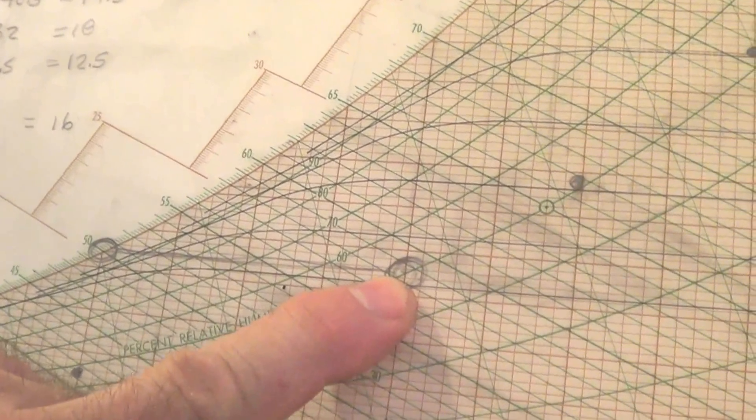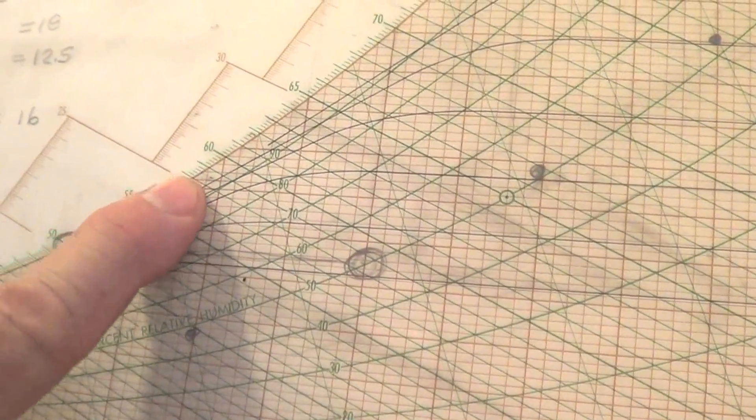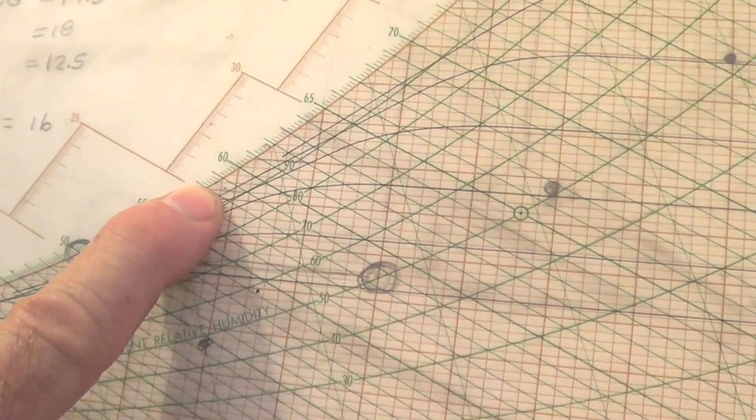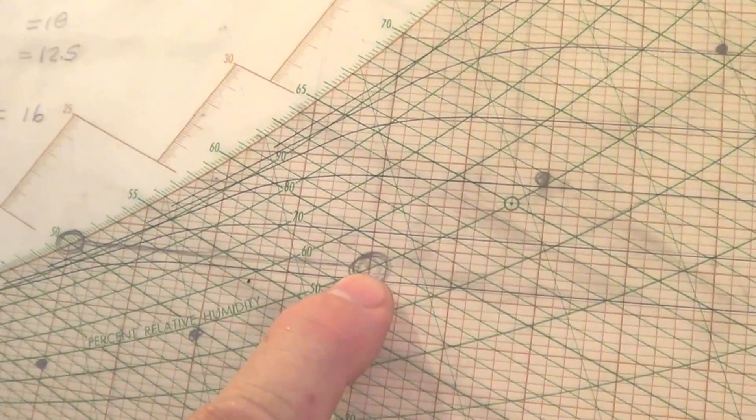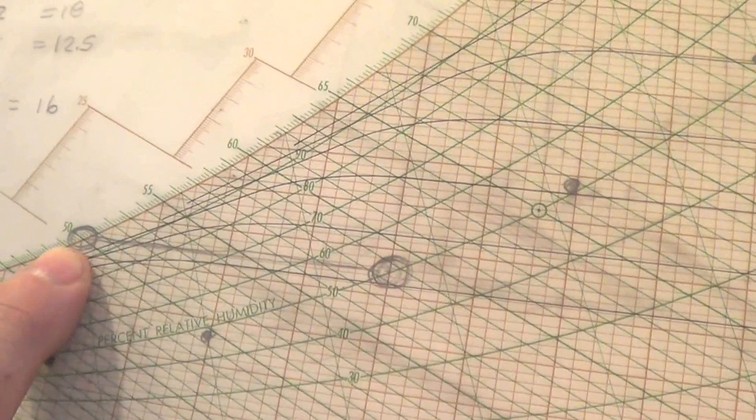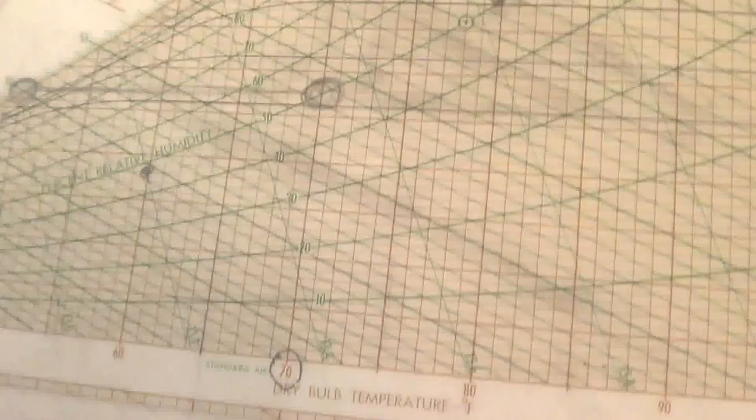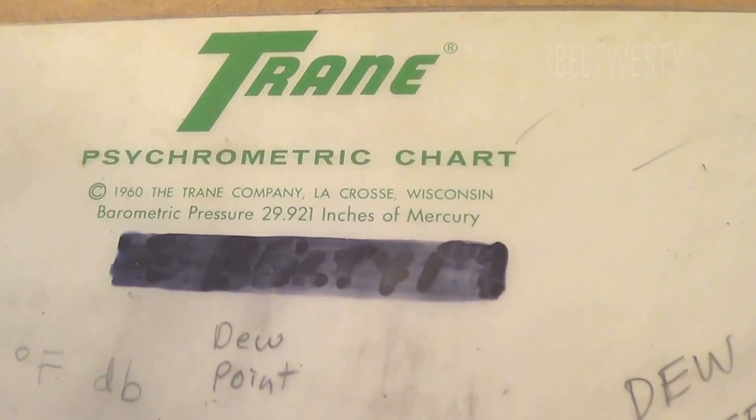If you took the same process and want to know what the wet bulb is, you'd extend the line up here and see it's about 58.5. But the dew point of this mixture here is actually going sideways. It's over here at 50 degrees. This is a trained psychometric chart in English.